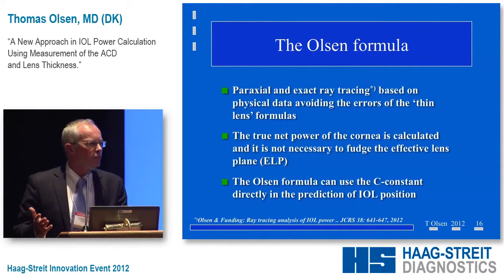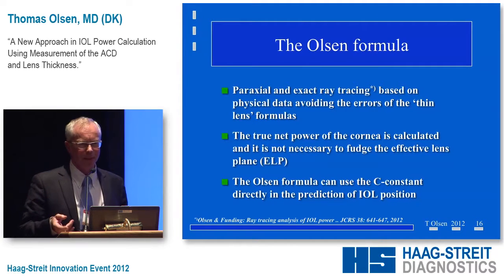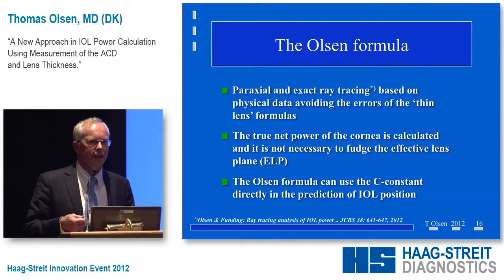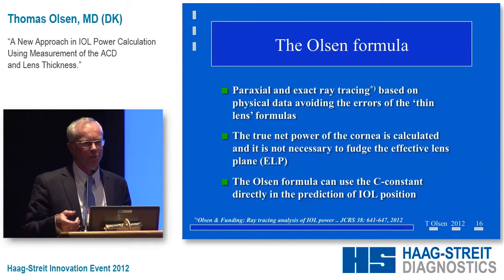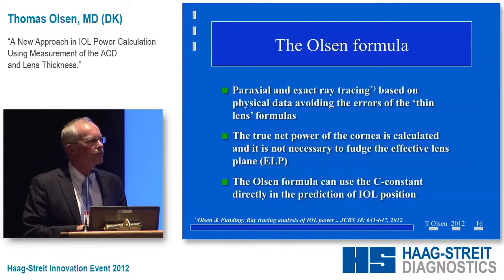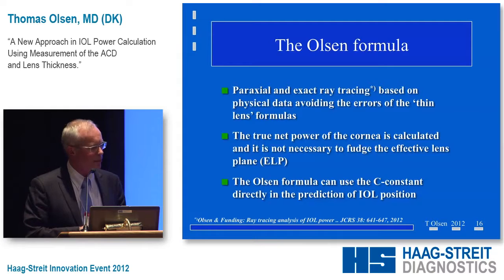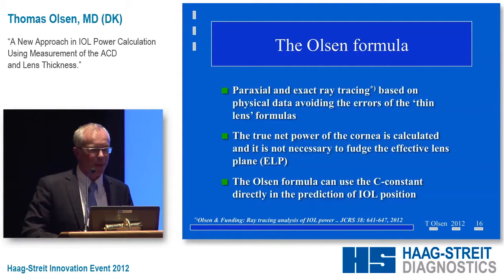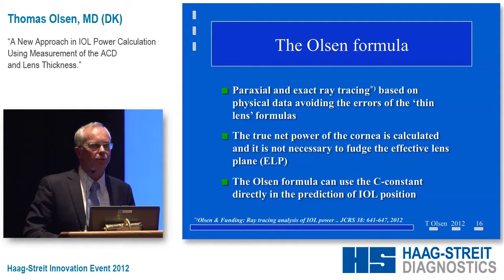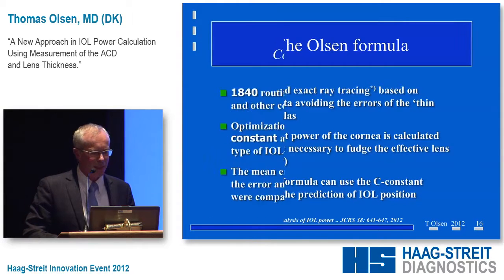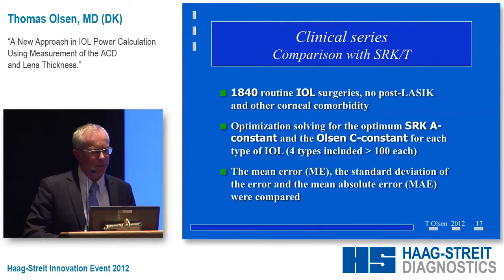Now we know the physical position of that implant in the eye. To use that, we need a formula that takes this parameter in a useful manner, and there you cannot rely on thin lens formulas — you've got to use thick lens formulas, paraxial ray tracing, or exact ray tracing. I'm happy to have such a formula that can use the exact position of the implant. One advantage of a thick lens approach is you can have the true net power of the cornea, not relying on the anterior surface alone. I want to show how we compare our predictions with the SRKT in 1840 routine lens surgeries.